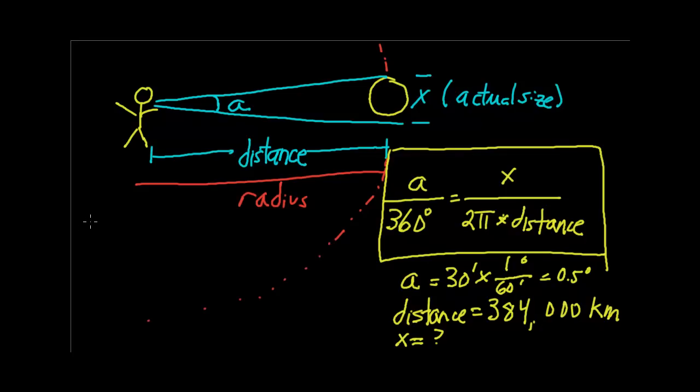Then we set up the problem. We have 0.5 degrees is to 360 degrees as x, which we don't know, is to 2π times the distance, which is 384,000 kilometers.